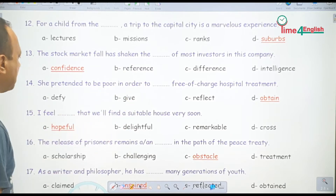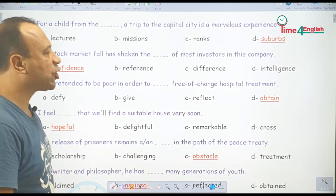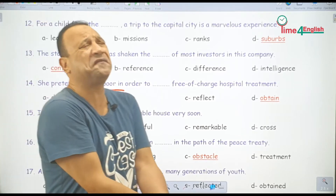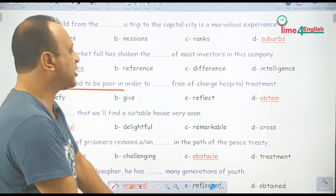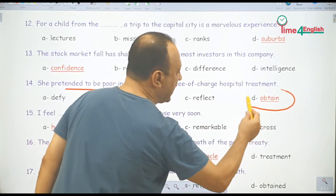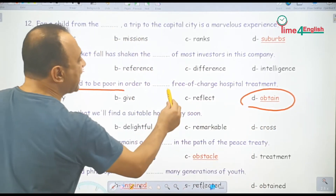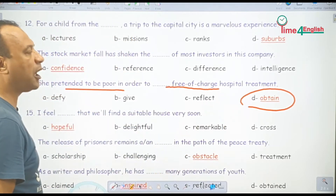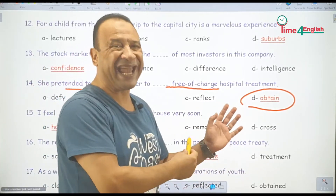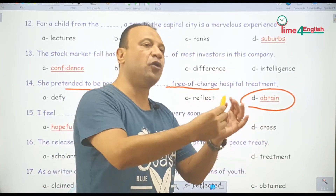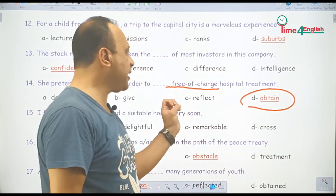She pretended to be poor in order to obtain free of charge hospital treatment. تظاهرت بالفقر وإنها معندهاش فلوس علشان تحصل على علاج مجاني. Free of charge hospital treatment — صعبت عليهم فوافقوا إنهم يعالجوها مجاناً.